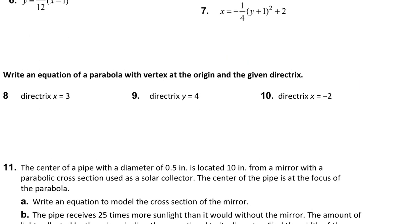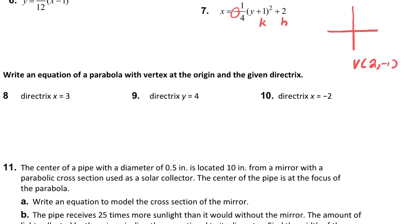For this equation, we need to find the directrix and the vertex. Typically this would be your h and this would be your k, but since we're going from left to right, these two have to switch — so now this is your k and this is your h. Since it's negative, it will be opening up to the left. So our vertex is going to be two comma negative one.